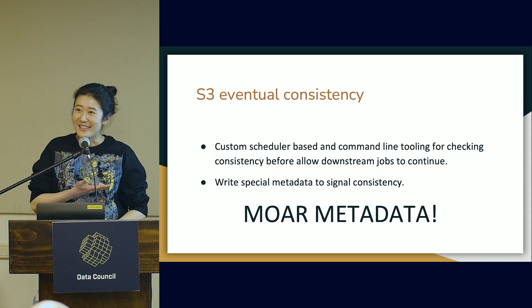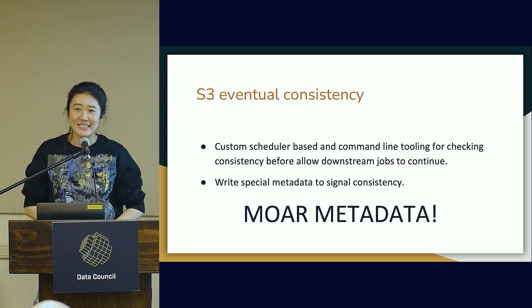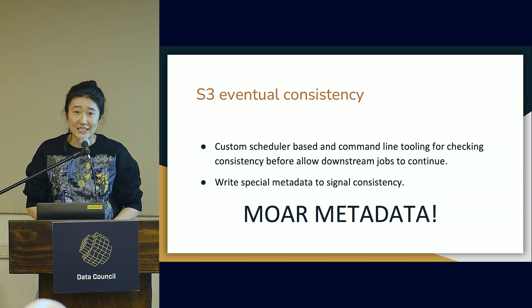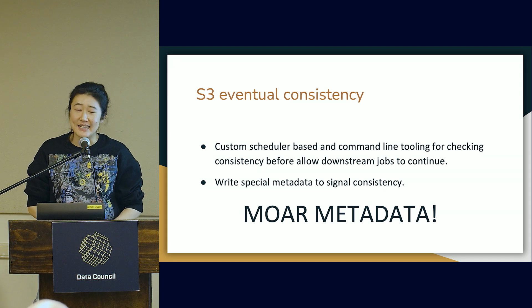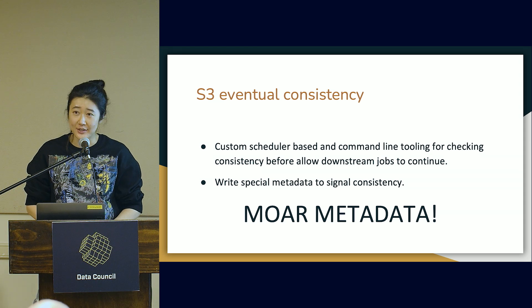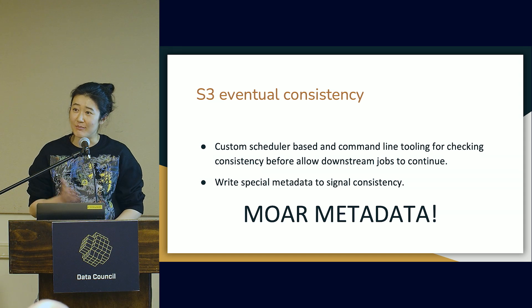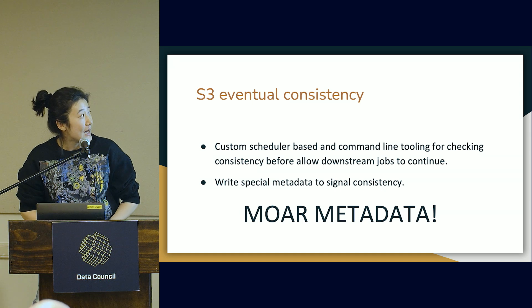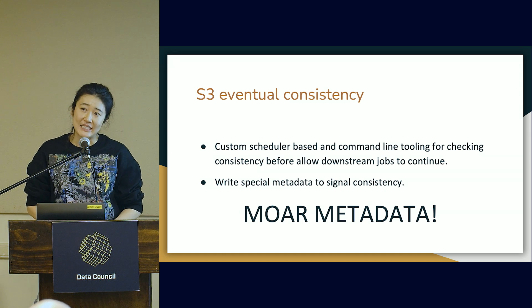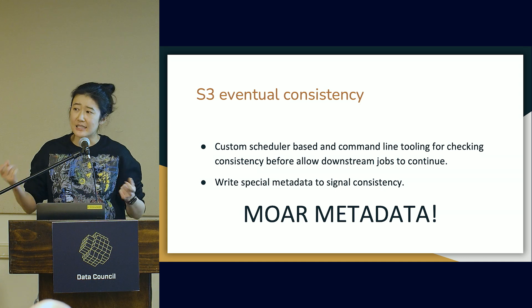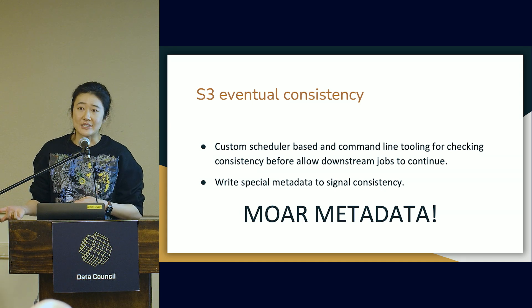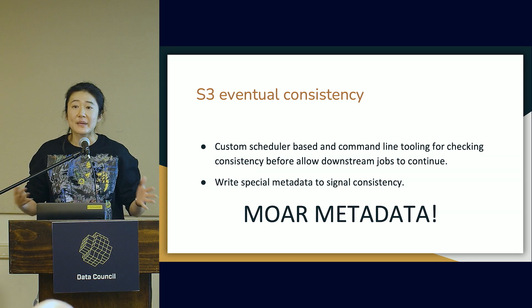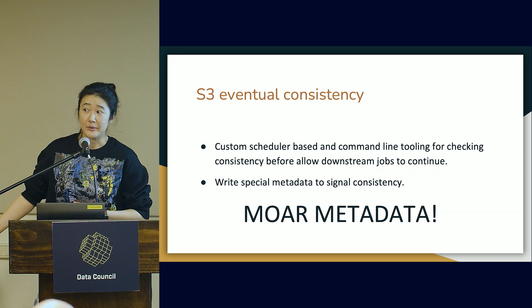Another way we ensure correctness is we deal a lot with S3 eventual consistency. It's not an issue anymore since 2020, but if you worked at a company that started before 2020, you'll probably see code that guards against this — ghosts in the closet. We basically wrote our own metadata layer to make sure things are consistent. We write extra metadata alongside the S3 data to make sure all pieces are in place before we let the pipeline move on.